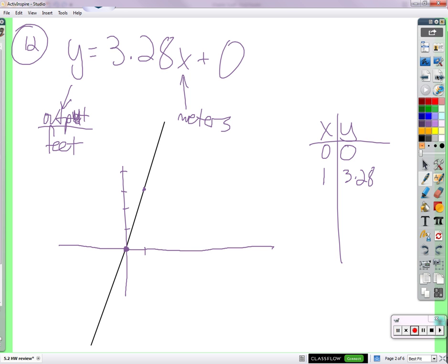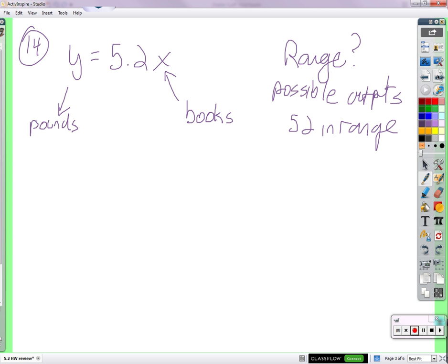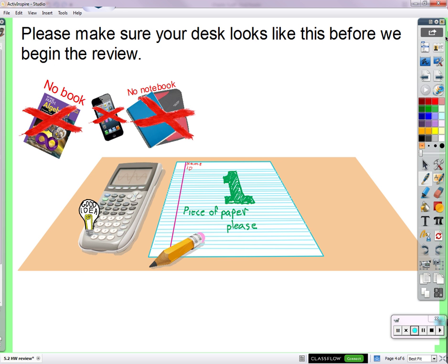Now the range is continuous or it has the possibility or the ability to be continuous. But because it relies on the number of books and books is discrete, you have a discrete function. You have a discrete domain. Okay. Of course, you sound like you are doing great. So let's pass that back in. Thank you.